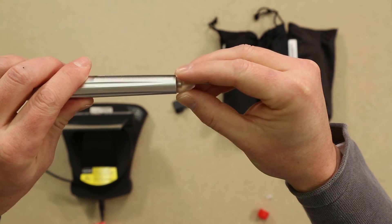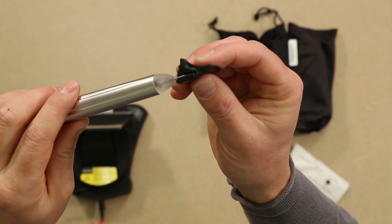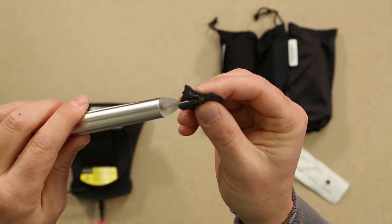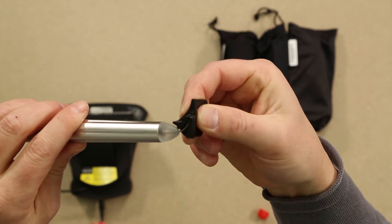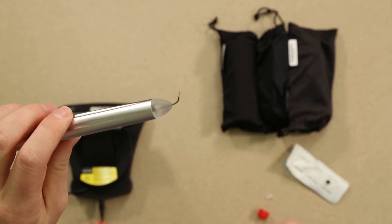Gently screw on the tip to the metal handpiece. Take the black bending tool and align with the tip. Turn the tip until it reaches approximately a 90 degree angle. You will notice that the tip is pre-initiated and ready for use.